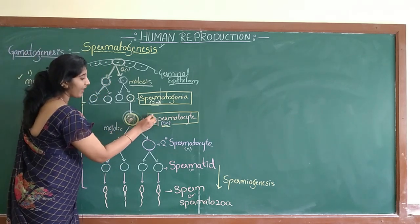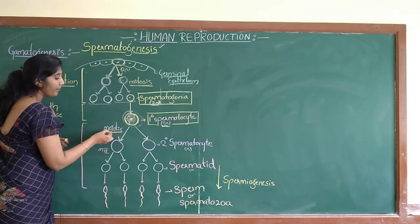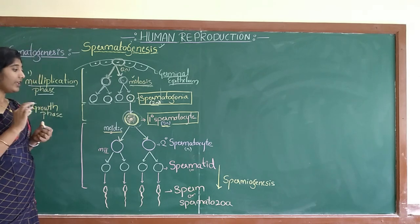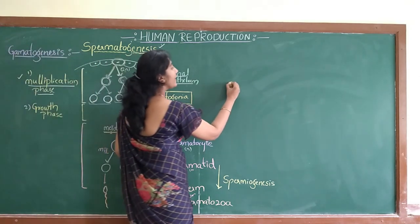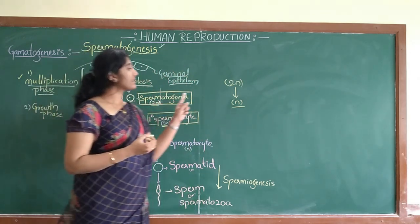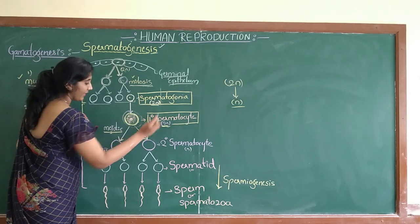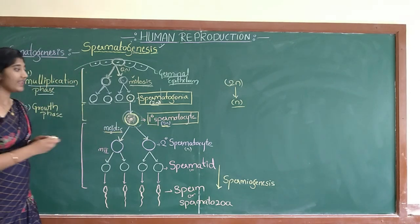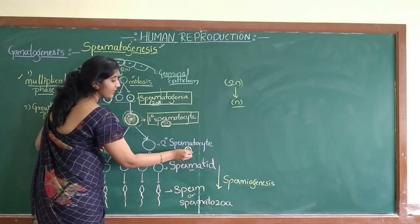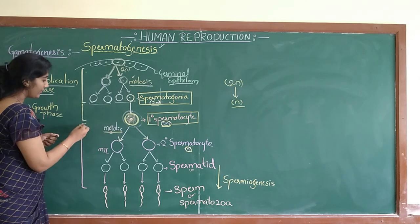Now this primary spermatocyte is going to divide meiotically. So in the multiplication and growth phases the division was mitosis, but here the division is meiosis or meiotic cell division. In meiotic cell division, the diploid cell becomes haploid. Haploid means a single set of chromosomes; diploid means double set (2 sets). The primary spermatocyte undergoes meiotic cell division, so the diploid cell becomes haploid (n). We now get the secondary spermatocyte, and this is the third phase.